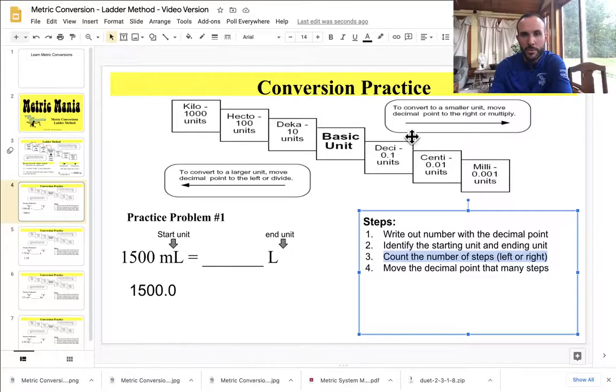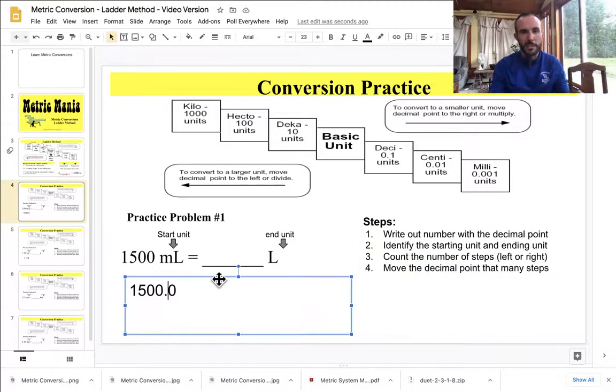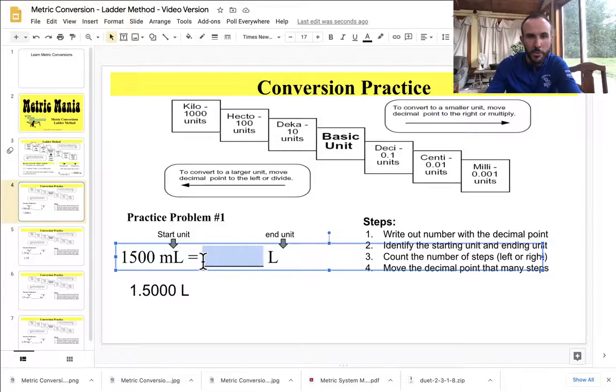So if I go from milli to the base, I jump one, two, three steps to the left. And I'm going to move the decimal point that many steps and in that direction. So watch, my decimal point is right here. And I'm going to move it one, two, three. And I'm going to put that decimal point in its new spot. And now I have, instead of 1500 milliliters, I have 1.5 liters. It is that simple in the metric system. So 1500 milliliters is equal to 1.5 liters.